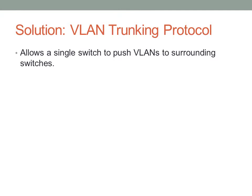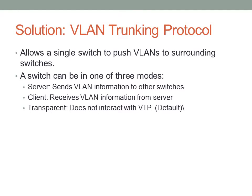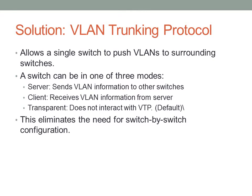We do that with VLAN trunking protocol. VTP is designed to allow a single switch to push VLAN information to surrounding switches. This VLAN information is contained in what we call a VLAN database file — typically named vlan.dat on Cisco switches — and is pushed to other switches. A switch can be in one of three VTP modes: server mode, where the device can send and receive VLAN information; client mode, where the device can receive VLAN information but cannot make any VLAN modifications; and transparent mode, where the device just passes VTP information through without actually using it.